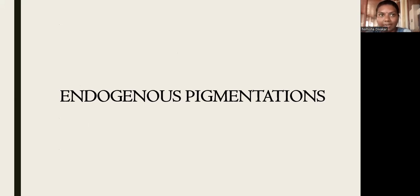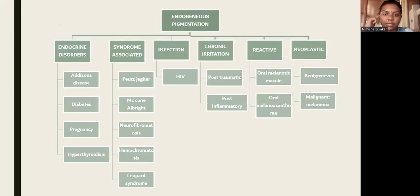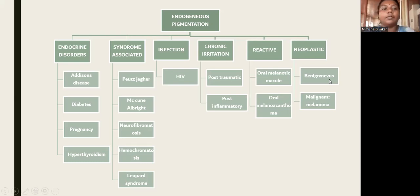These are the common exogenous pigmentations — caused by heavy metals, drugs, amalgam or graphite tattoos, and habits. Now we discuss endogenous pigmentation, which is caused by intrinsic factors. Endogenous pigmentation can be classified as due to endocrine disorders, syndrome-associated pigmentation, infection, chronic irritation, and neoplasm.